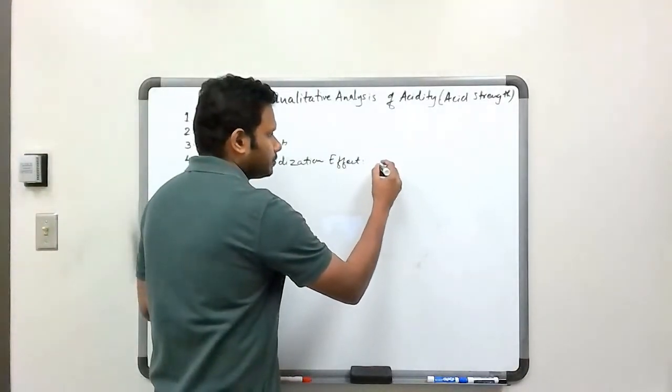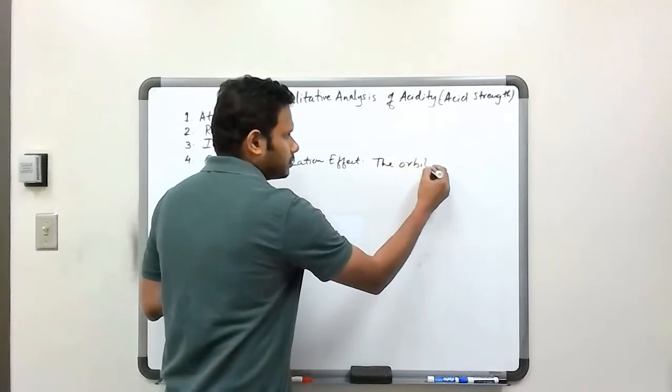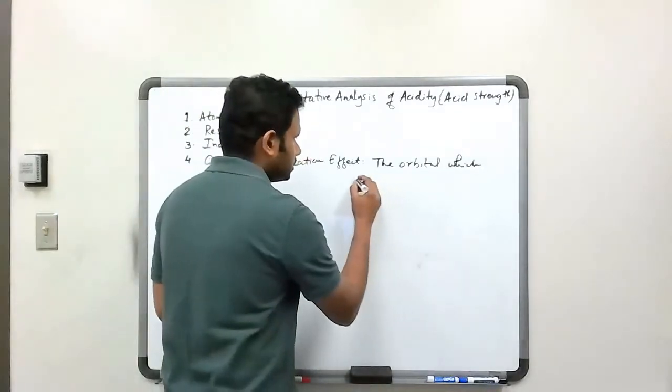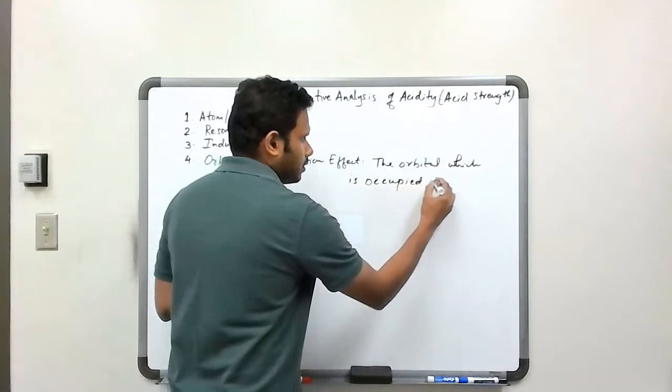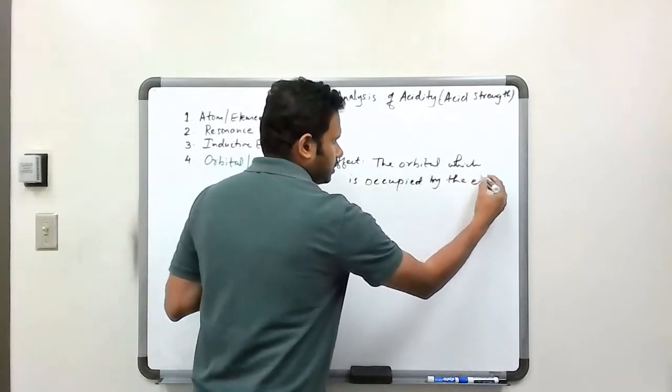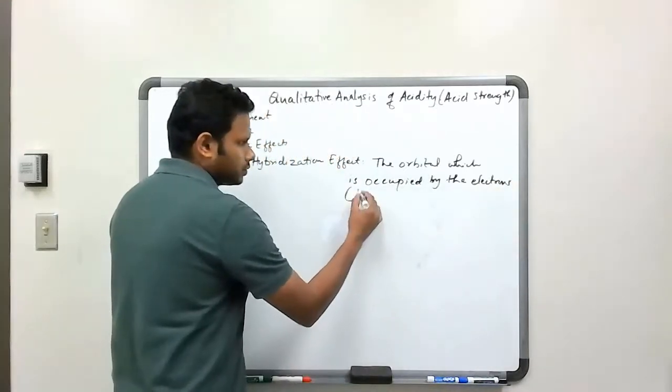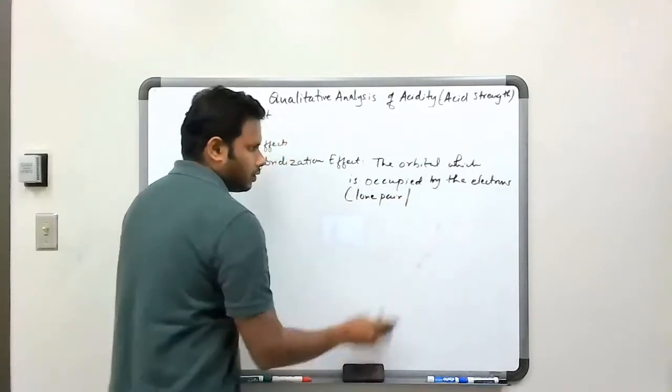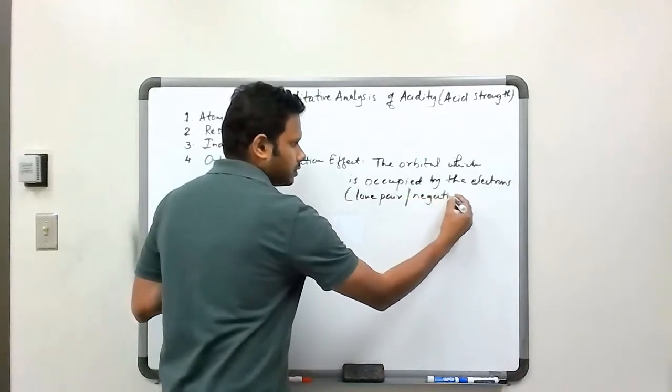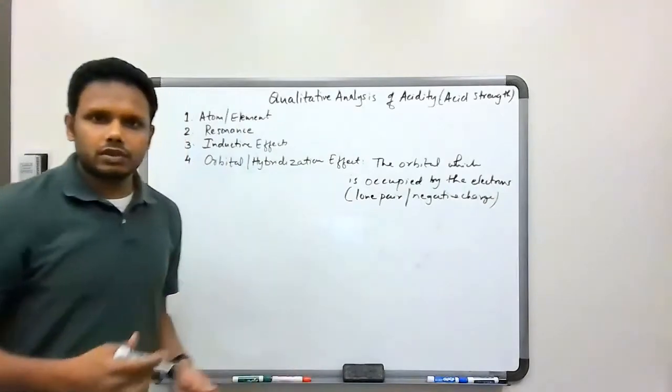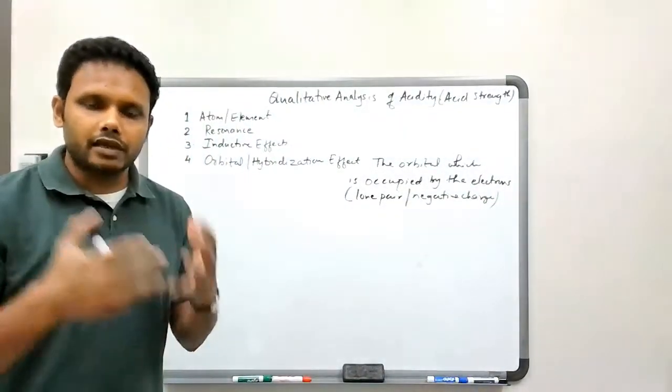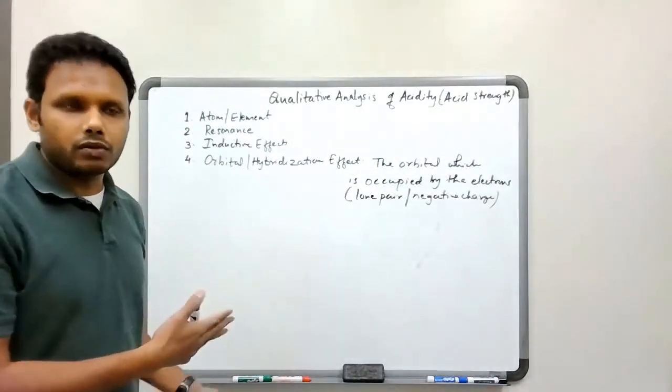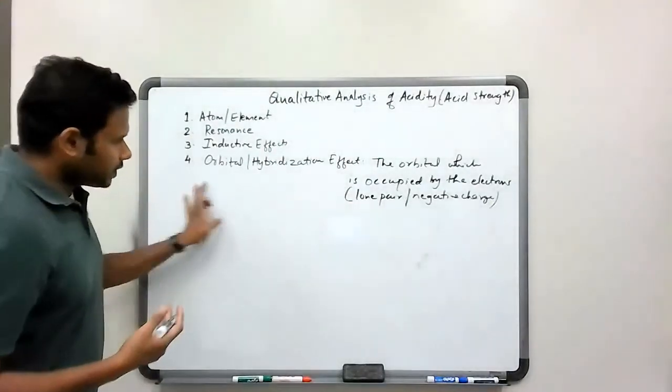This has to do with the orbital which is occupied by the electrons. The electrons could be the lone pair or the ones that give rise to the negative charge. It concerns the orbital in which that electron is present, and that actually goes back to hybridization because the hybridization is what determines where the electrons are going to be present. To explain this, let's look at some very simple molecules.